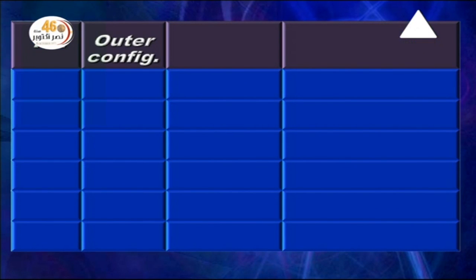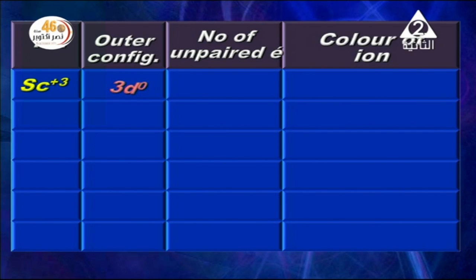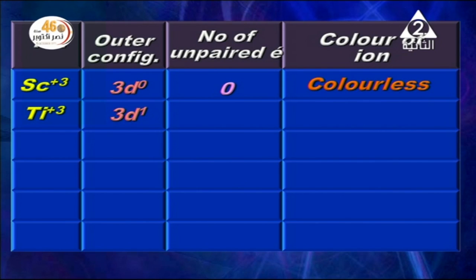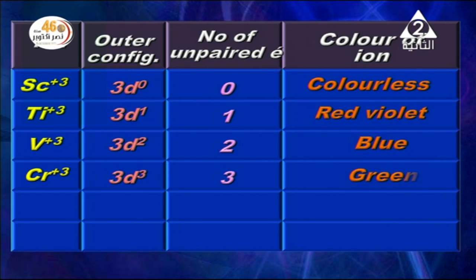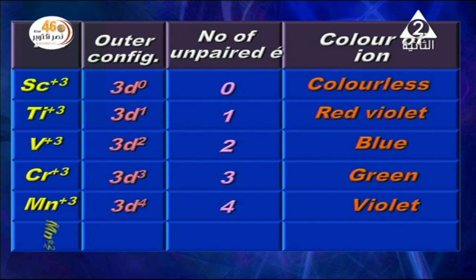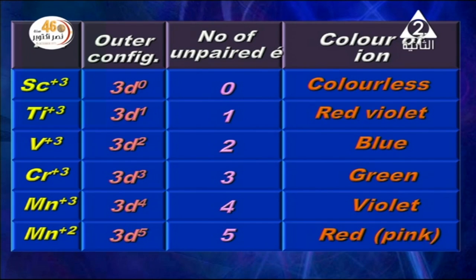The following ions and their colors: Sc3+ has an empty 3d sub-level, no unpaired electrons — colorless. Ti3+ has 3d1 (1 unpaired electron) — colored, red-violet. Mn3+ (with 3d2, 2 unpaired electrons) — colored, blue. Cr3+ has 3d3 (3 unpaired electrons) — colored, green. Mn3+ (3d4, 4 unpaired electrons) — colored, violet. Mn2+ has 3d5 (5 unpaired electrons) — colored, red or pink.